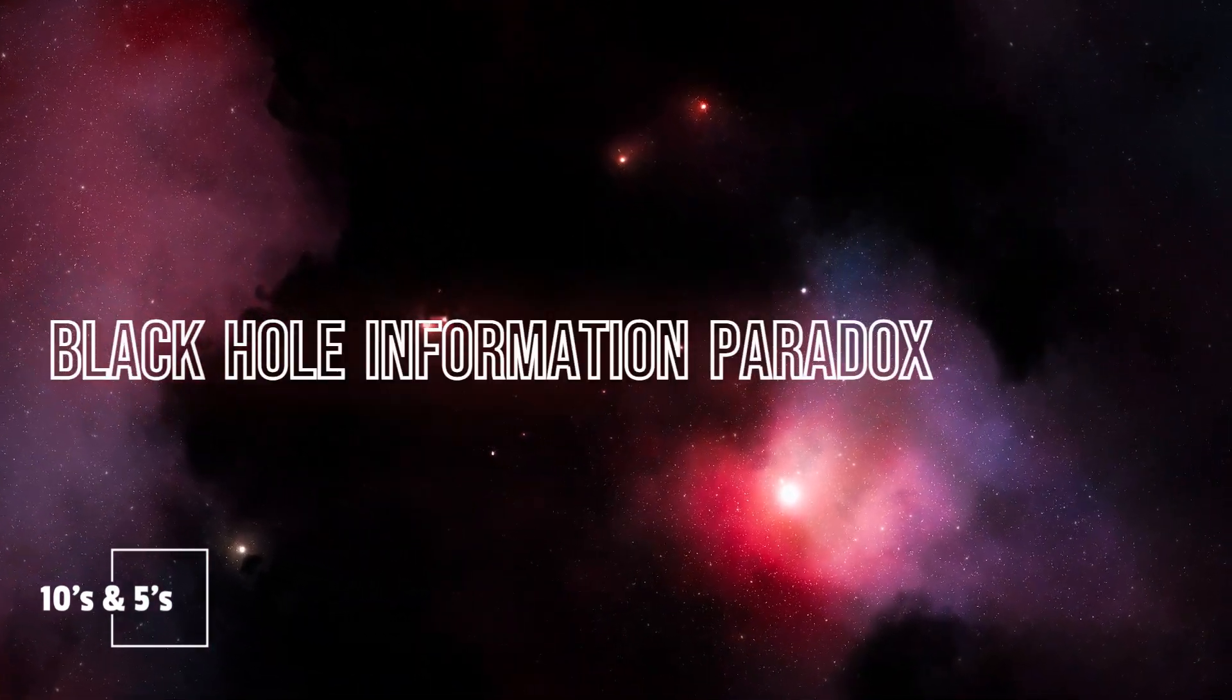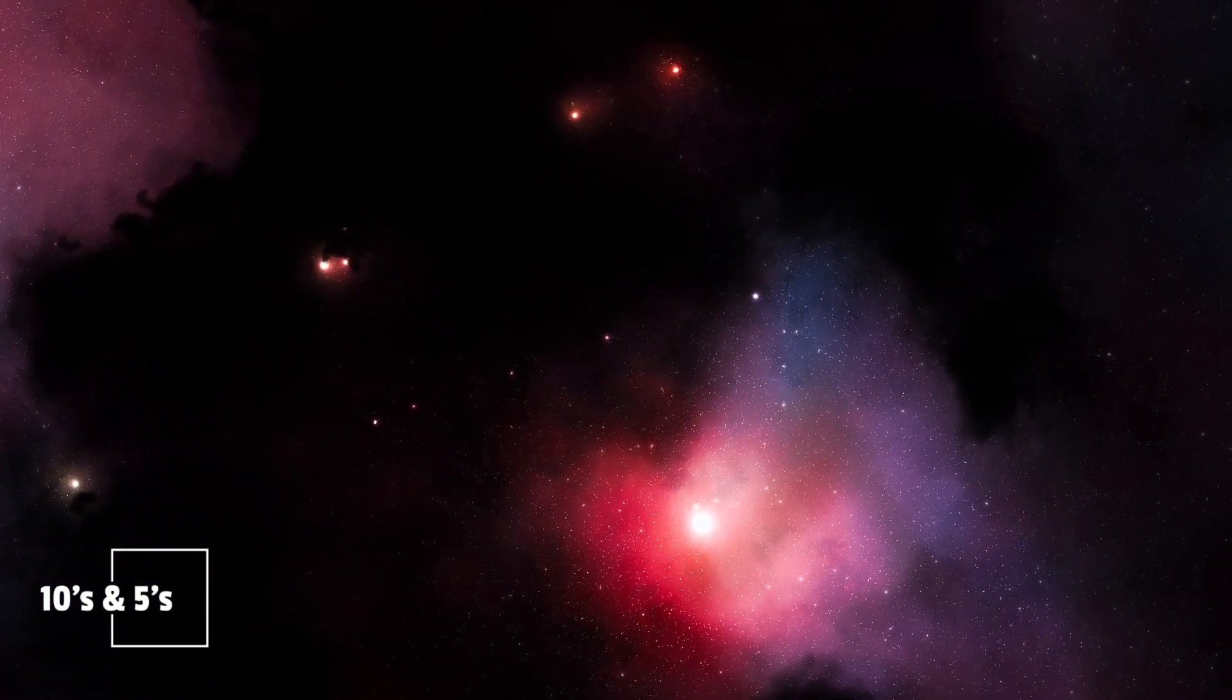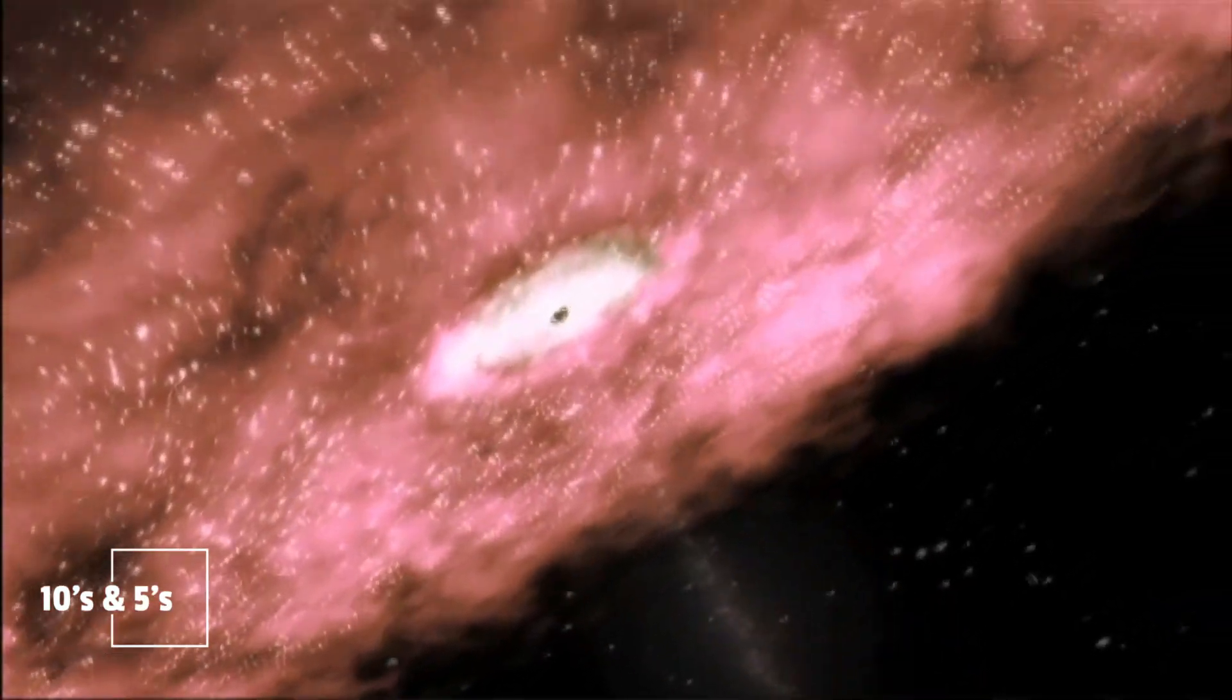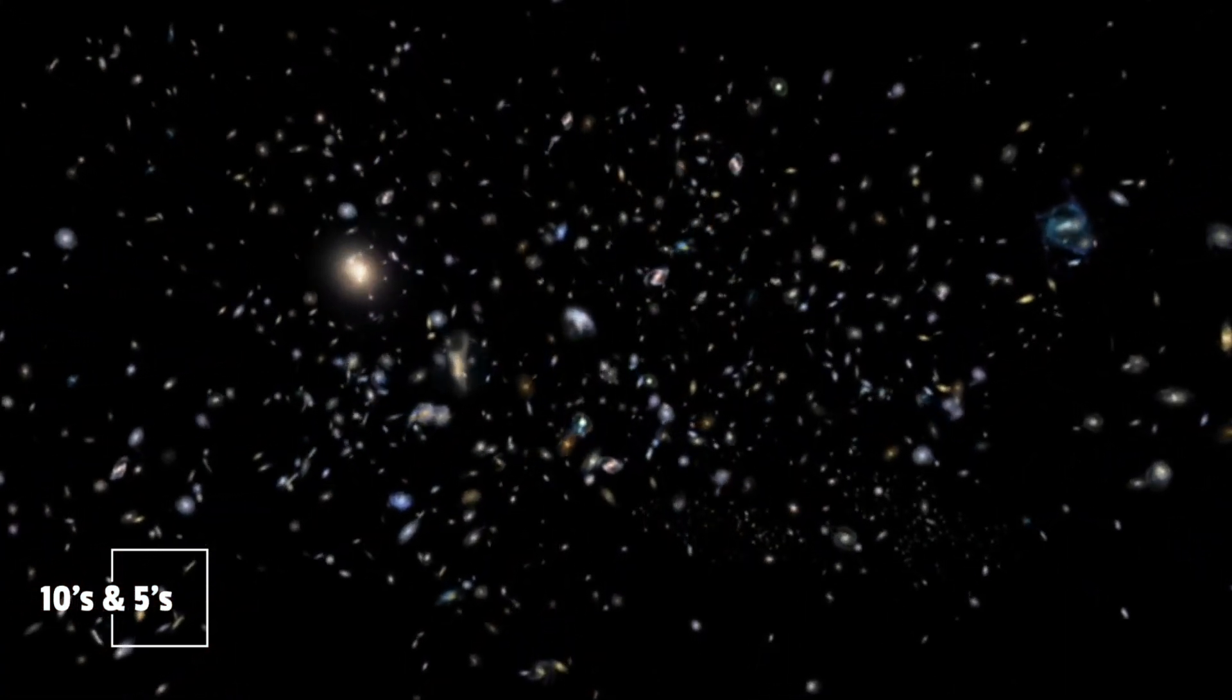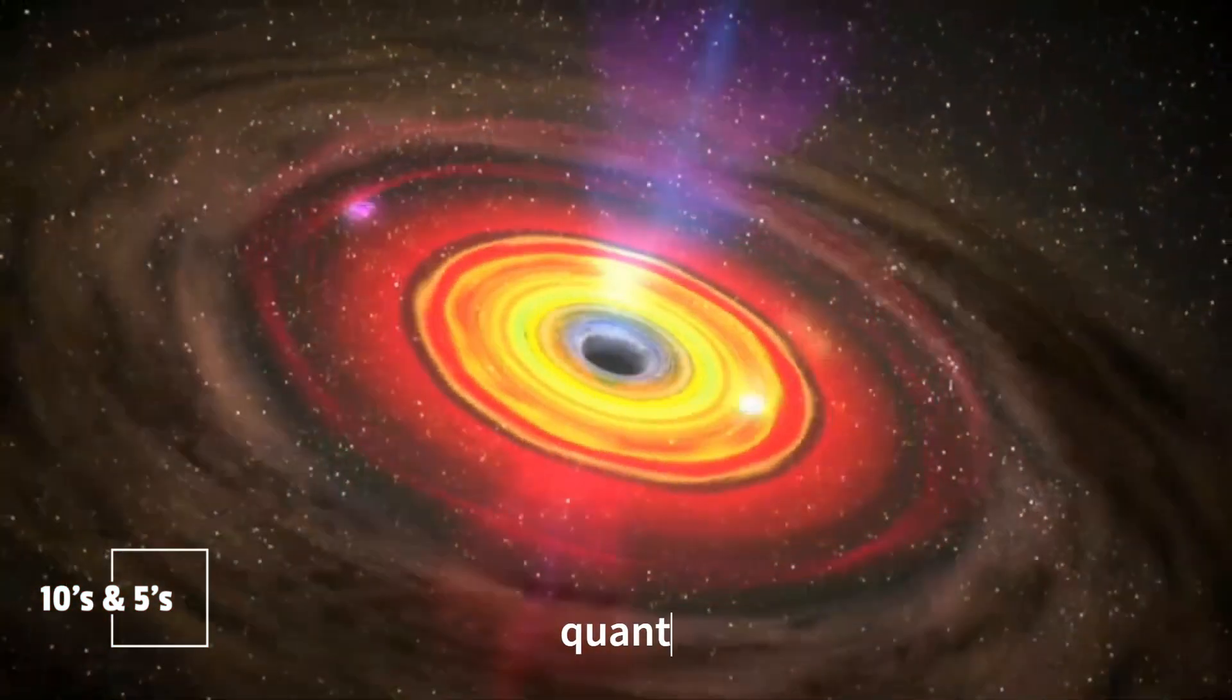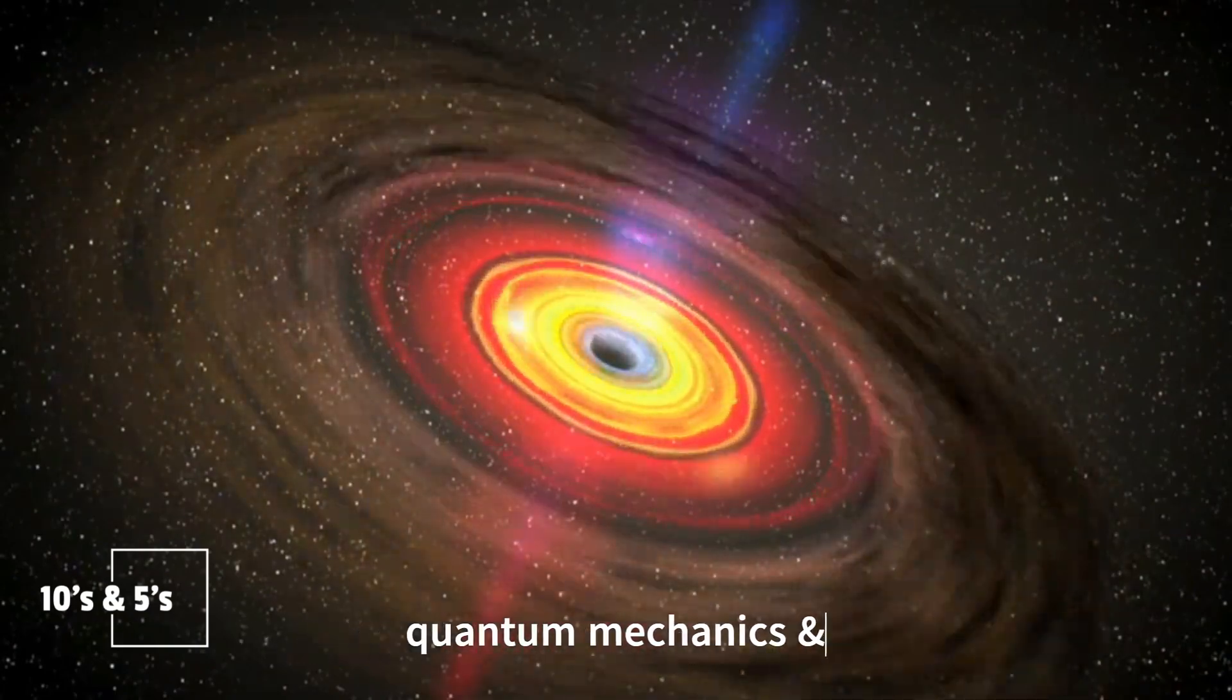Number 3. Black Hole Information Paradox. A long-standing puzzle in the realm of black holes is the information paradox. According to the principles of quantum mechanics, information cannot be lost. Yet when matter falls into a black hole, it seemingly disappears without a trace. Resolving this paradox holds the key to understanding the interplay between quantum mechanics and general relativity, two foundational theories in physics.